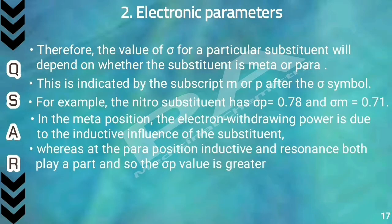The value of sigma for a particular substituent will depend on whether the substituent is meta or para, indicated by the subscript m or p after the sigma symbol — sigma-m or sigma-p. For the nitro group, sigma-p equals 0.78 and sigma-m equals 0.71. The sigma-p is larger because in the meta position the electron-withdrawing power is mainly due to the inductive effect, whereas in the para position it is due to both inductive and resonance effects.